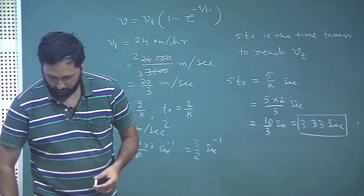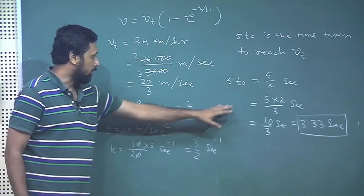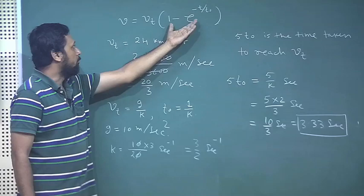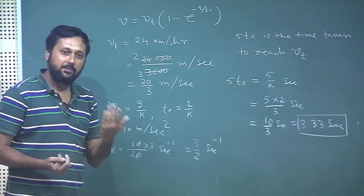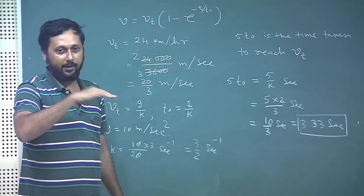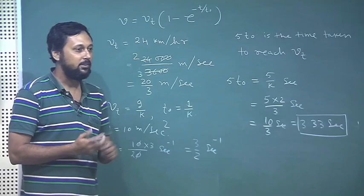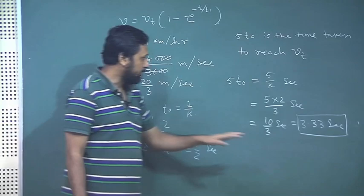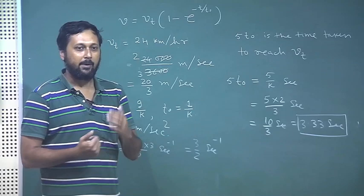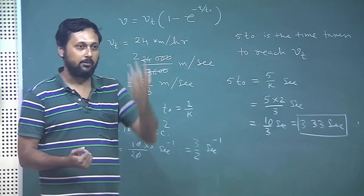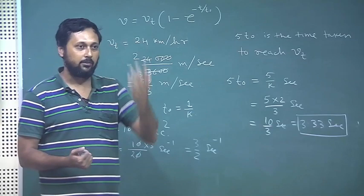The final answer is 3.33 seconds: a paratrooper who reaches a terminal velocity of 24 km/h takes 3.33 seconds to reach it. We are working on a very simplistic model — the actual physical situation is more complicated since there is flow and turbulence in the air. But even without considering all that, almost immediately after opening the parachute a paratrooper reaches terminal velocity, which is why they don't break their bones on landing.